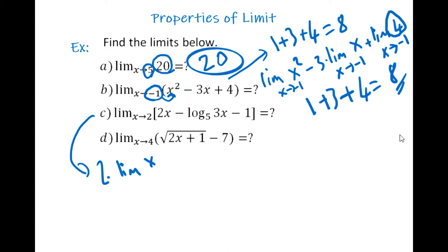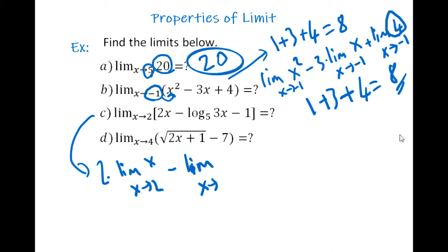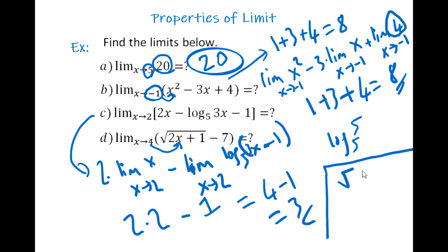For part c, this equals 2 times the limit of x as x→2, minus the limit of log base 5 of 5 as x→2. Putting in 2 for x: log base 5 of 5 equals 1, so it's 2×2 − 1 = 3. For part d, plugging 4 in for x: 2×4+1 = 9, √9 − 7 = 3 − 7 = negative 4.